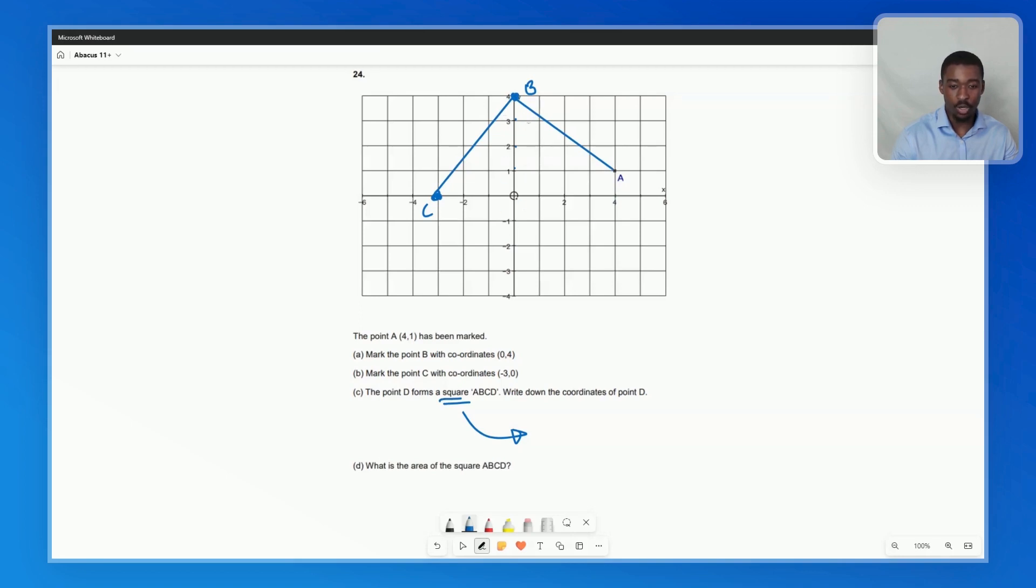So first and foremost, how are we going to work out the length of the side? Well, we can simply use this understanding right here. If we want to go from A to B, we go 1, 2, 3, 4 across, 1, 2, 3 up. Same thing going from B to C, we go 1, 2, 3 across, 1, 2, 3, 4 down. So it's 3, 4, 3, 4.